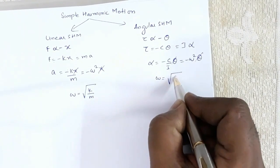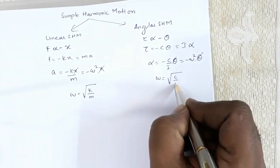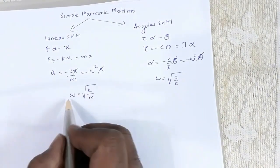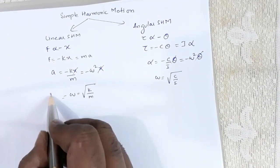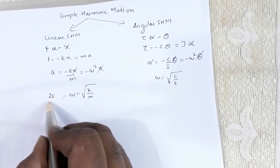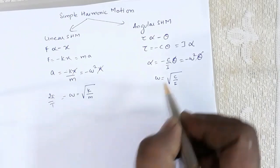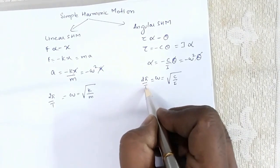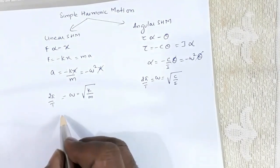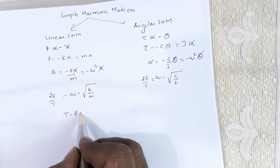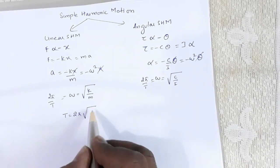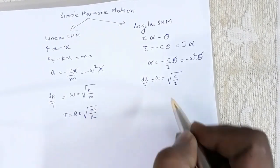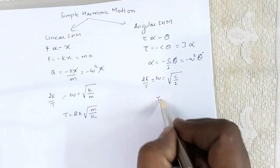We have ω = √(k/m), and in the angular case ω = √(c/I). Since ω = 2π/T, we can write T = 2π√(m/k).